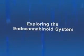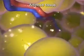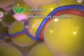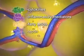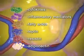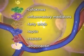Exploring the endocannabinoid system: adipose tissue, once viewed simply as a metabolically inert storage depot for triglycerides, is now considered to be an active endocrine organ. Adipose tissue releases a host of factors including cytokines, inflammatory mediators like plasminogen activator inhibitor-1, fatty acids, leptin, resistin, and adiponectin. The release of these factors has in part been linked to a newly discovered physiologic system: the endocannabinoid system.